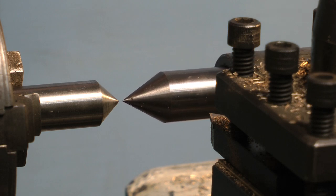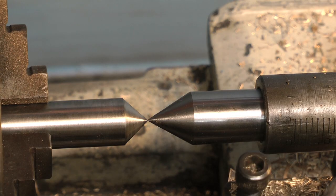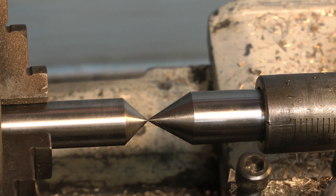This first one is the tailstock test. If you put a parallel centre in the chuck and a morse taper centre in the tailstock, and bring the points together, the two points should be exactly in line with each other. If they aren't, some adjustments will need to be made.